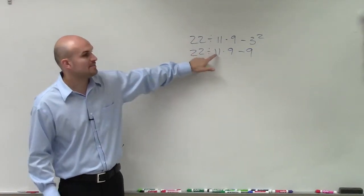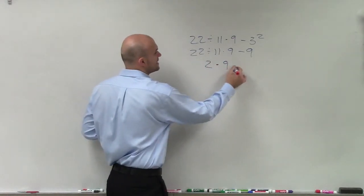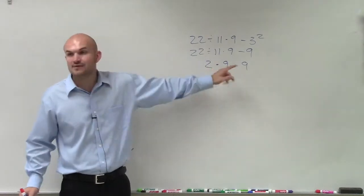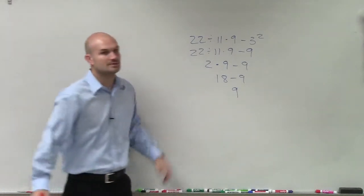Well, 22 divided by 11 is 2 times 9 minus 9. And then now we keep on working to the left. 2 times 9 is going to be 18 minus 9. And then 18 minus 9 is 9.